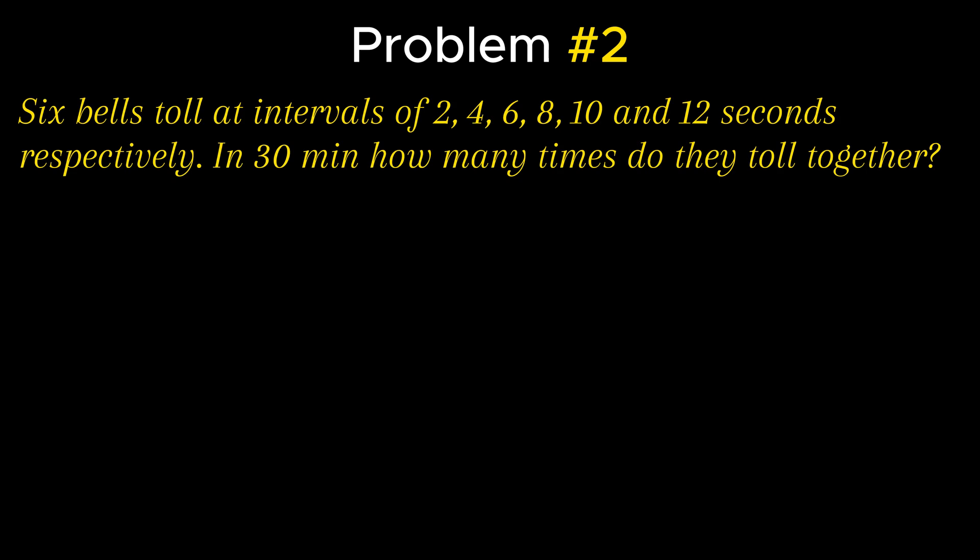Moving on to the next problem. Problem 2 states that 6 bells toll at intervals of 2, 4, 6, 8, 10, and 12 seconds respectively. In 30 minutes, how many times do they toll together? As per the understanding of the problem, the time at which all bells will toll together has to be considered.